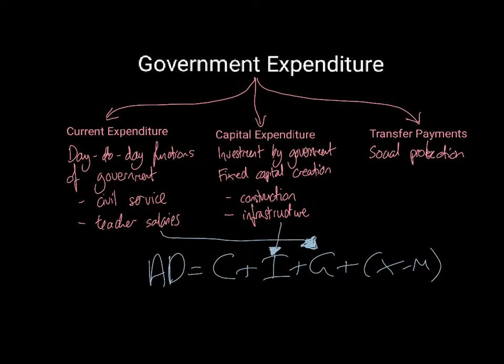A common mistake candidates make is to say that if the government increases benefits, that shows up in G — it doesn't. There is no direct impact of transfer payments on any of the aggregate demand components. What we probably could say, though, is that transfer payments, because you are generally transferring income or wealth from those with high income to those with low income, mean that the people with low incomes tend to have a higher propensity to consume. So we might see an indirect impact — shown as a dotted line — of these transfer payments on the C component, consumption.